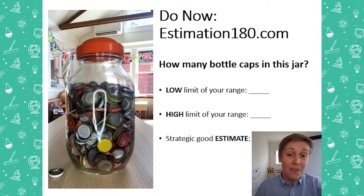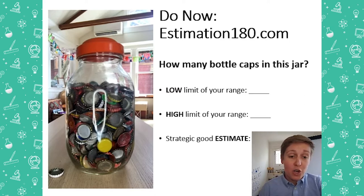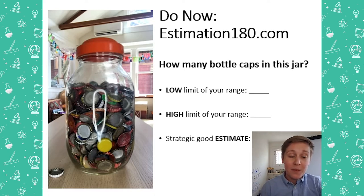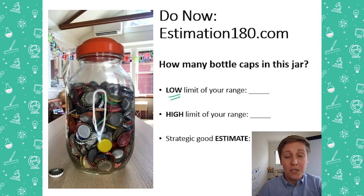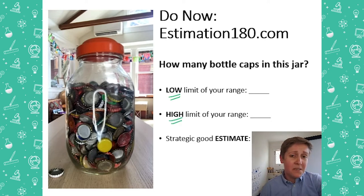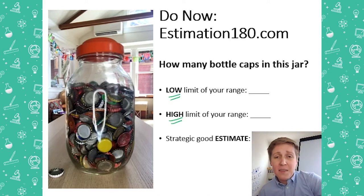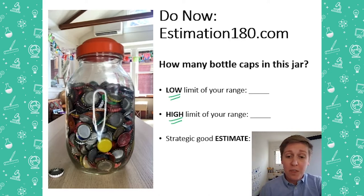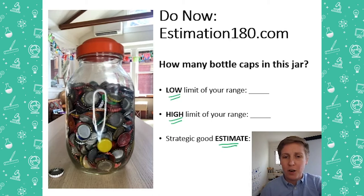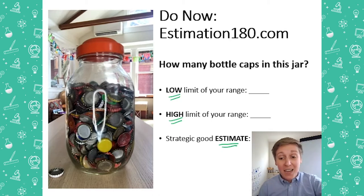To start off, we're going to do a do-now together. This is based off of the website Estimation 180. I want you to think about how many bottle caps are in this jar. Look on the side — there is one bottle cap sitting there to show you the size. To make a good estimate, think of a reasonable low amount and a reasonable high amount for your range, then come up with a good estimate within that range. At the end of this video, I'm going to play myself counting every single one of those bottle caps for you to see if your estimate was correct.